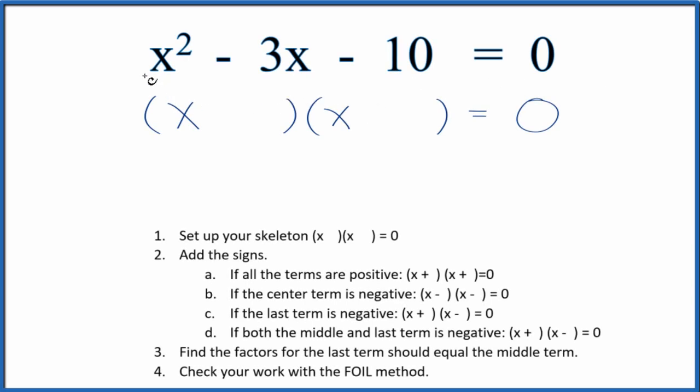All right, let's factor the equation x squared minus 3x minus 10 equals 0. We could use the quadratic equation for this, but let's give it a try just by figuring out the factors that go into 10, and then we figure out the middle term here.